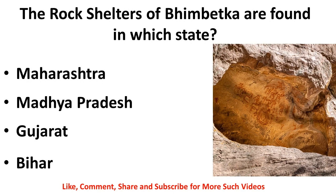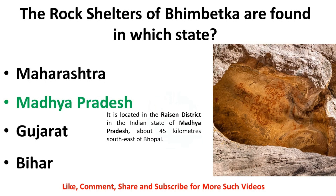The next world heritage site we will discuss is Bhimbetka — the Rock Shelters of Bhimbetka. The rock shelters of Bhimbetka are found in which state — Maharashtra, Madhya Pradesh, Gujarat, or Bihar? The correct answer is Madhya Pradesh. They are located in the Raisen district of Madhya Pradesh, about 45 kilometers southeast of Bhopal.